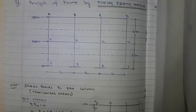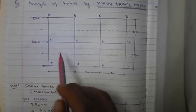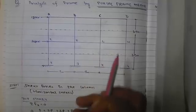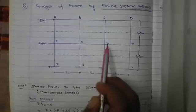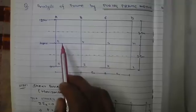Hello everyone, welcome to Online Engineering by SJ. Today we will discuss the portal frame method. This is the frame which we need to analyze — it is an indeterminate structure. Here are some assumptions: the horizontal shear in the interior columns is taken as double that of the exterior columns, and the point of contra-flexure lies at the midpoint of the column.